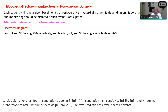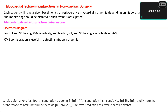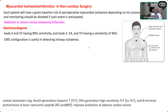In addition to the standard leads, there is another configuration called the CM5 configuration. CM5 stands for Central Manubrium V5 position. In normal ECG placement, you put a right arm lead, a left arm lead, and a left leg lead. For CM5, you shift the right arm lead to the manubrium sterni, keep the left arm lead at the V5 position as normally done for unipolar precordial leads, and keep the indifferent lead on the left shoulder.